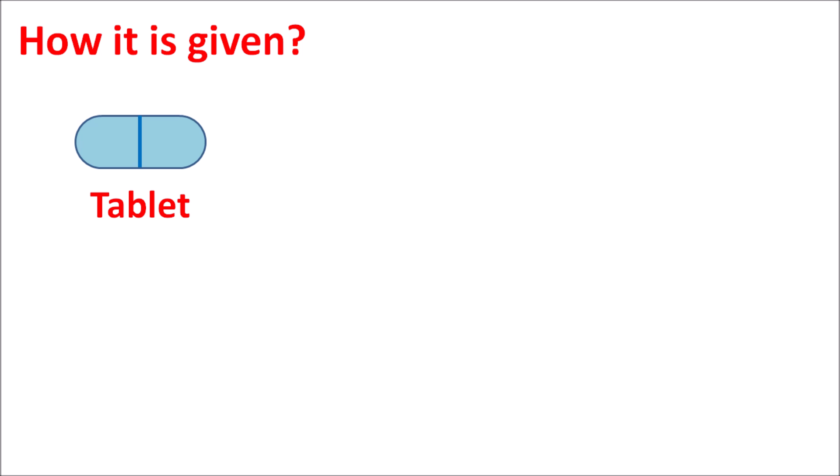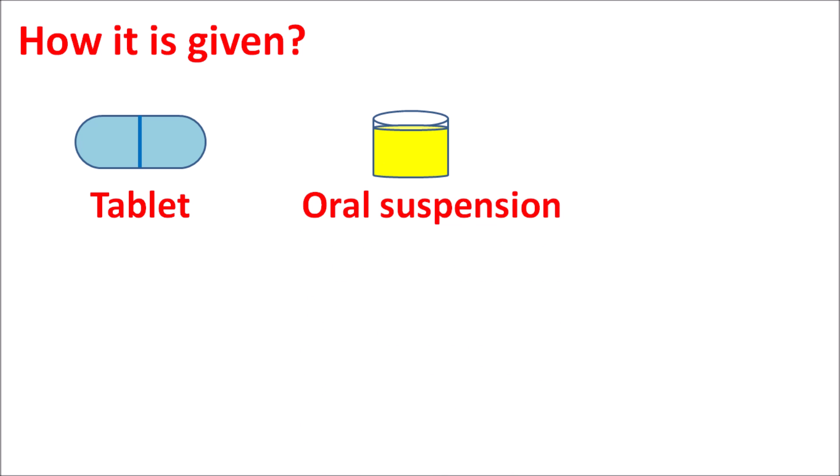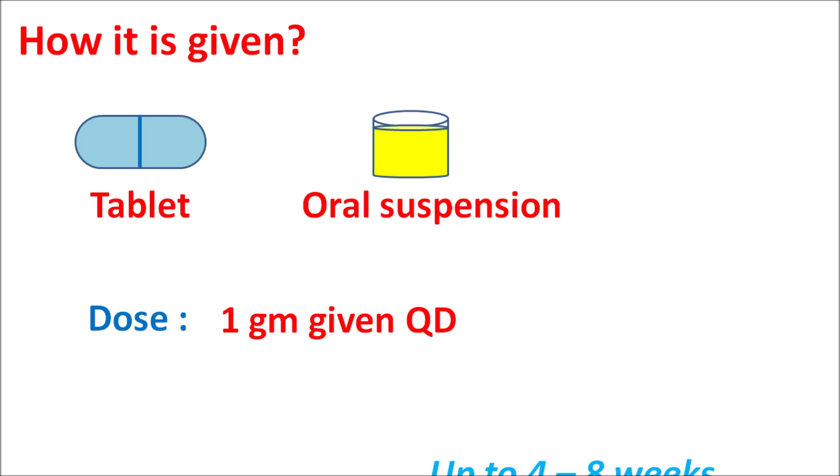How is it given? This drug is available as a tablet as well as oral suspension. The dose is 1 gram given 4 times daily, for a total of 4 grams, to increase ulcer healing and reduce ulcer progression. Effectiveness can be observed within one or two weeks, but treatment can be continued up to 4 to 8 weeks based on the state of ulcer healing and symptoms.